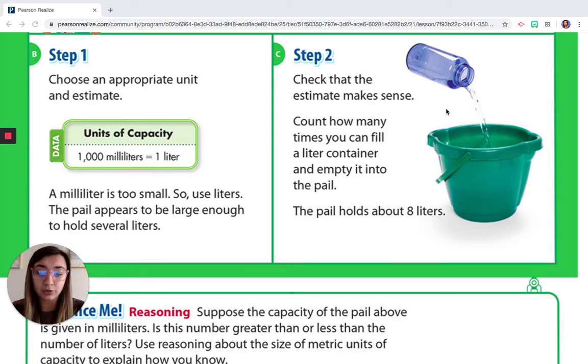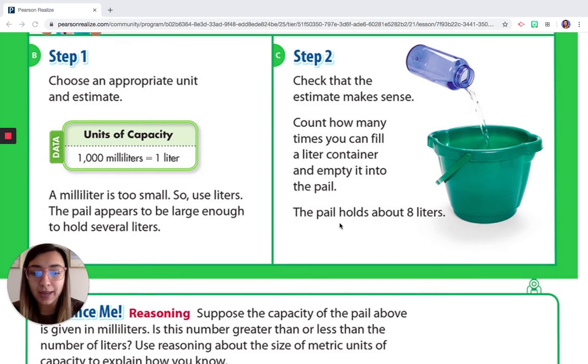So it says count how many times you can fill a liter container and empty it into the pail. We are not going to do that today. We are not doing any experiments. If you would like to try and do that at home, please ask your parents and feel free to do that. But here it says the pail holds about eight liters. So compare, would you rather do 1000 droplets or 1000 milliliters to fill the pail or just eight liters, eight water bottles?